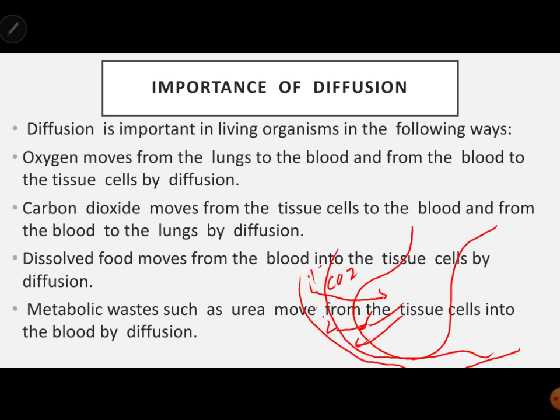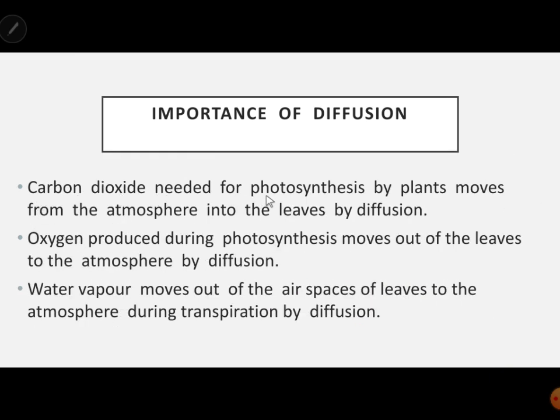Dissolved food moves from the blood into the tissue cells by diffusion. Metabolic waste such as urea and carbon dioxide move from the tissue cells into the blood by diffusion. In plants, carbon dioxide needed for photosynthesis moves from the atmosphere into the leaves by diffusion.